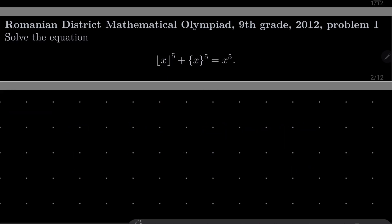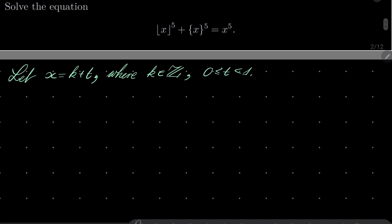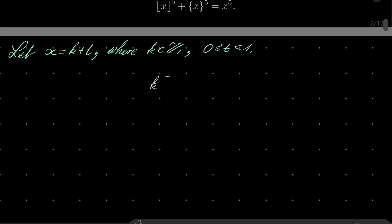Right. So as I suggested, let x equal k plus t, where k is an integer and t is some number between 0 and 1. Every real number can be written uniquely in this way. And our equation now becomes k to the 5th power plus t to the 5th power equals k plus t to the 5th power. All right.